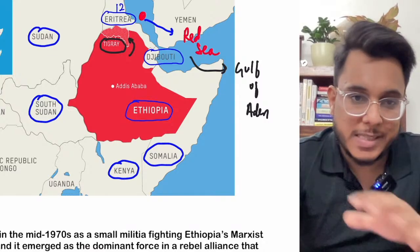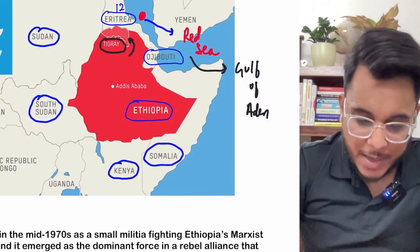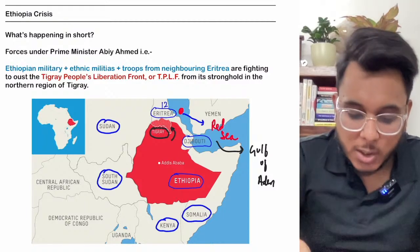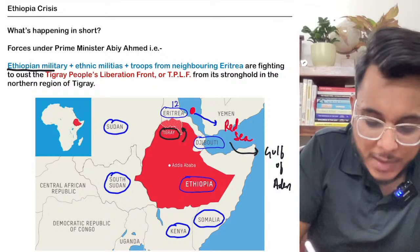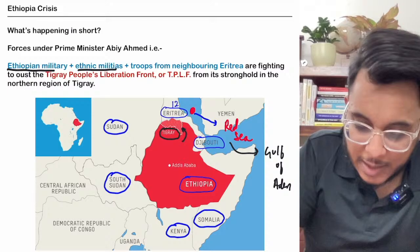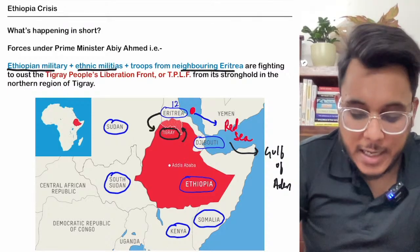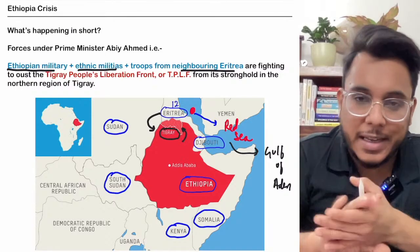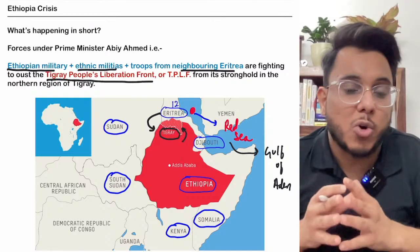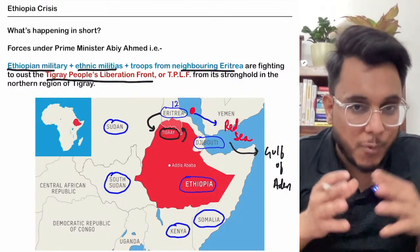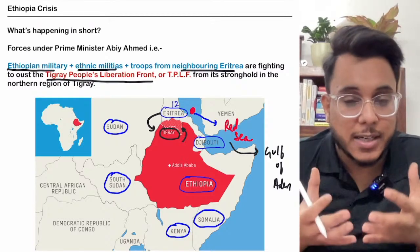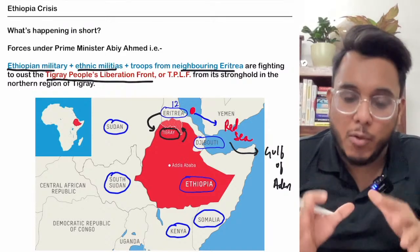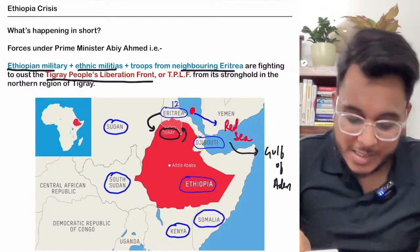A war is going on in Ethiopia between two groups. On one side there is the Ethiopian military, certain ethnic militias, and troops from Eritrea. On the other side is the Tigray People's Liberation Front, called the TPLF — a political party within Ethiopia that has developed differences with the Ethiopian government. Let's understand in detail why this controversy is going on.